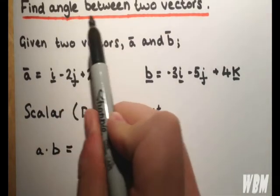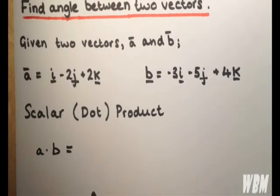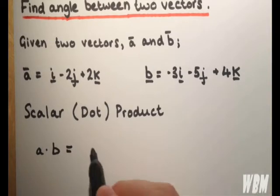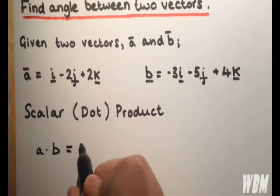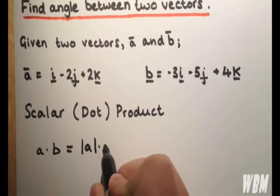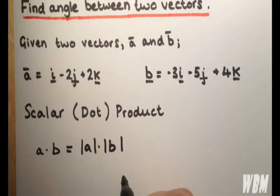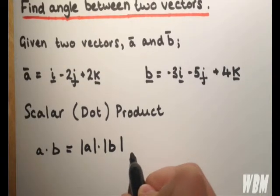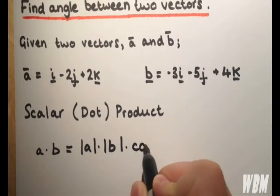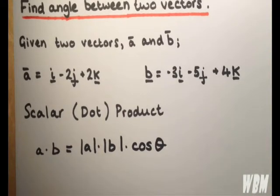Now, cos of the angle between a and b, I think you can see what we're getting at here. It's equal to the magnitude of a times the magnitude of b times cos of the angle theta.